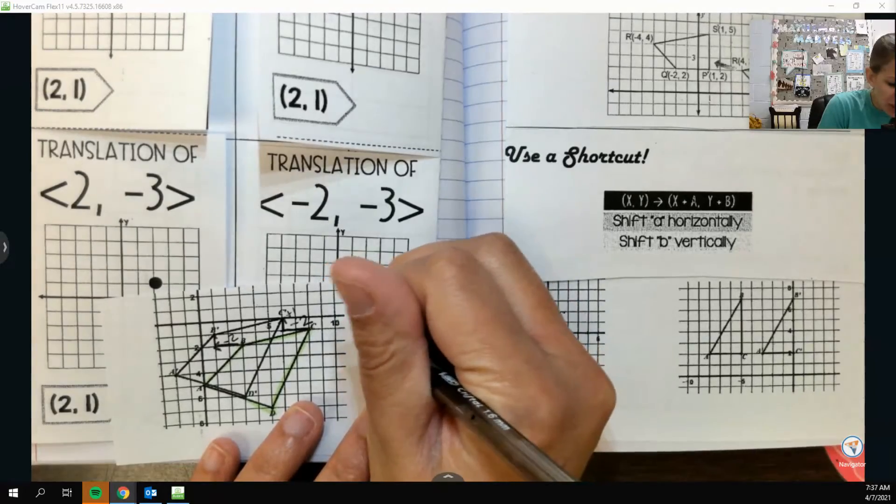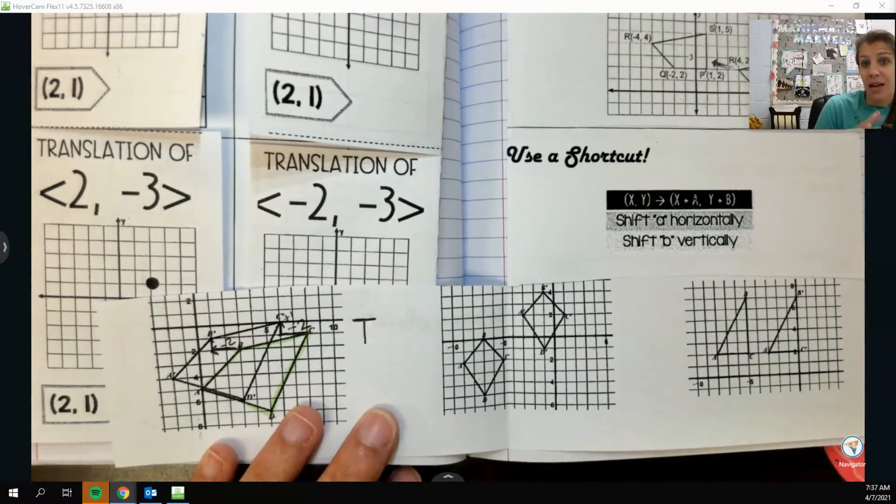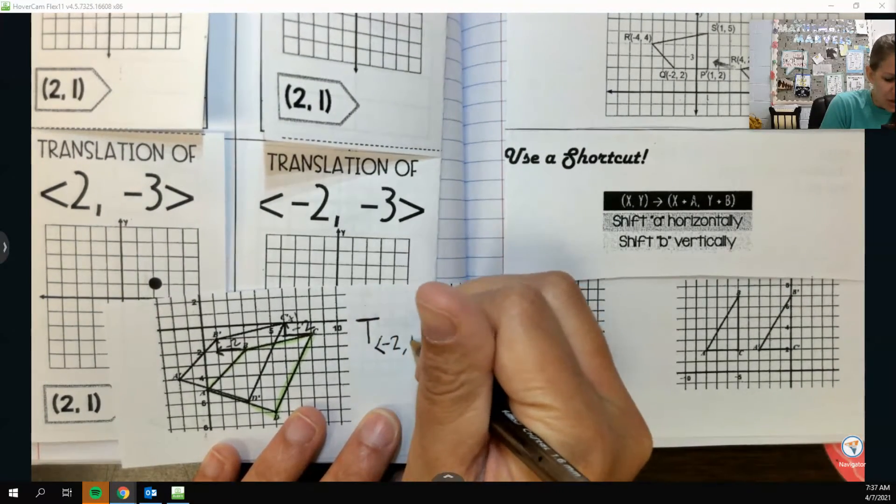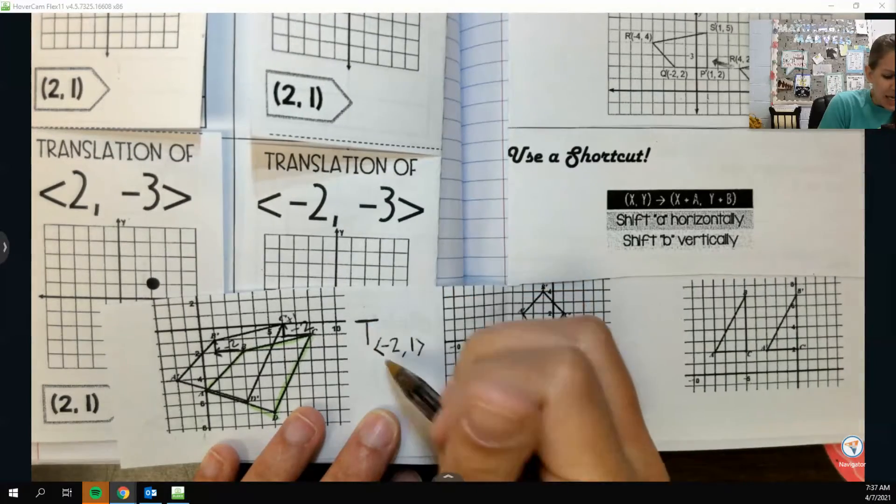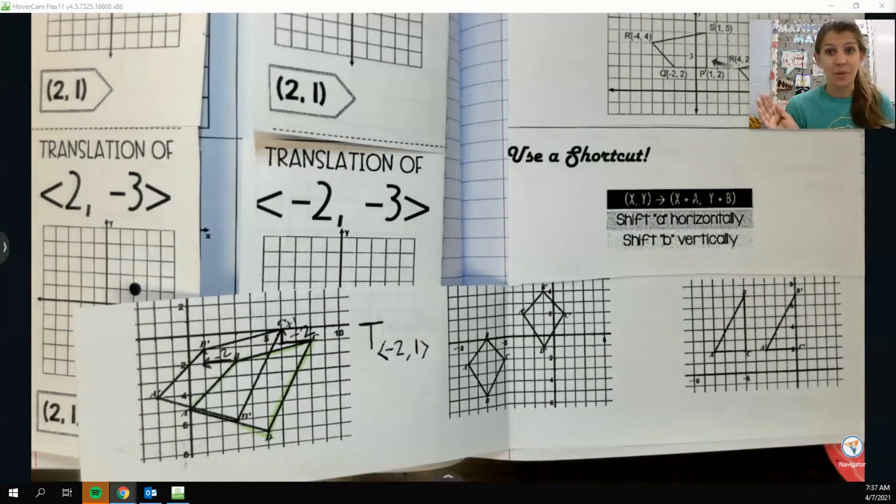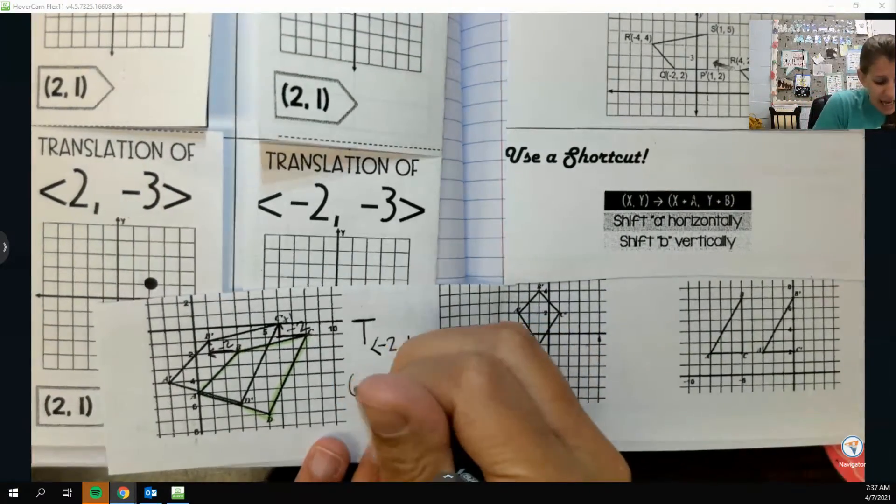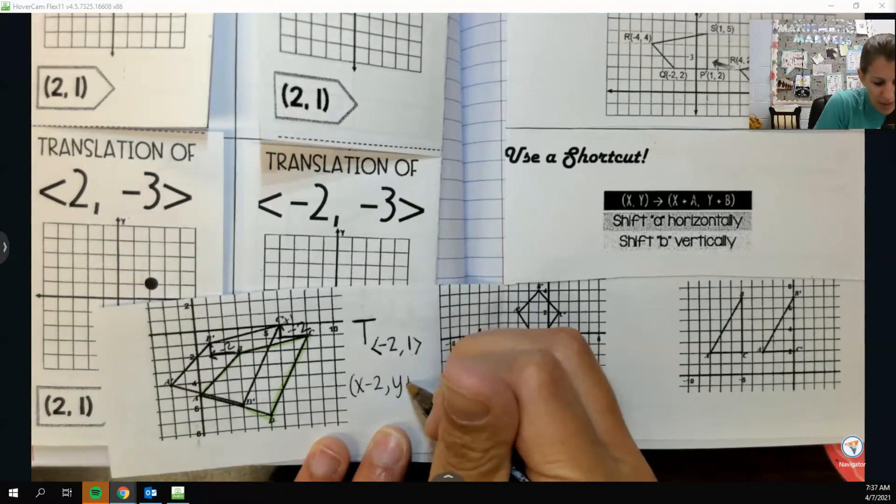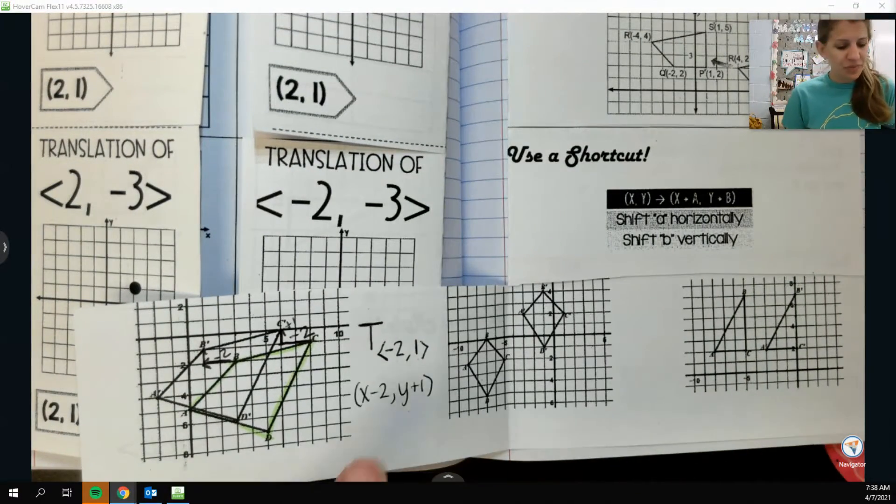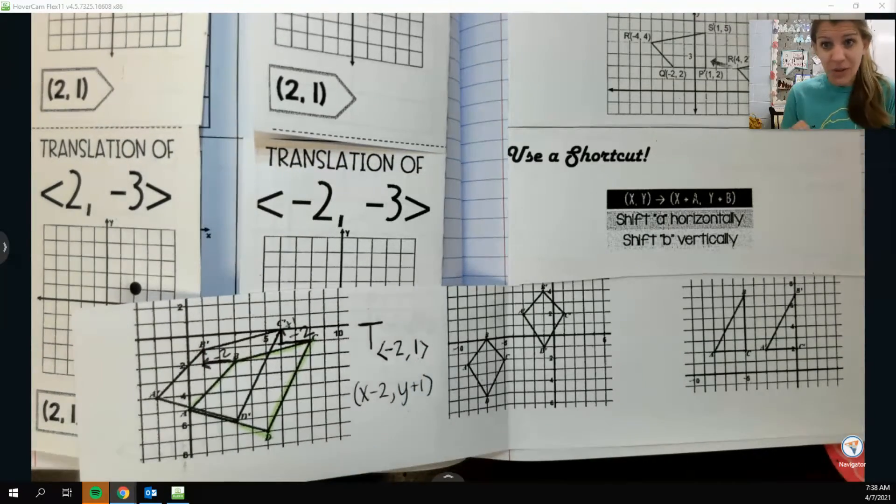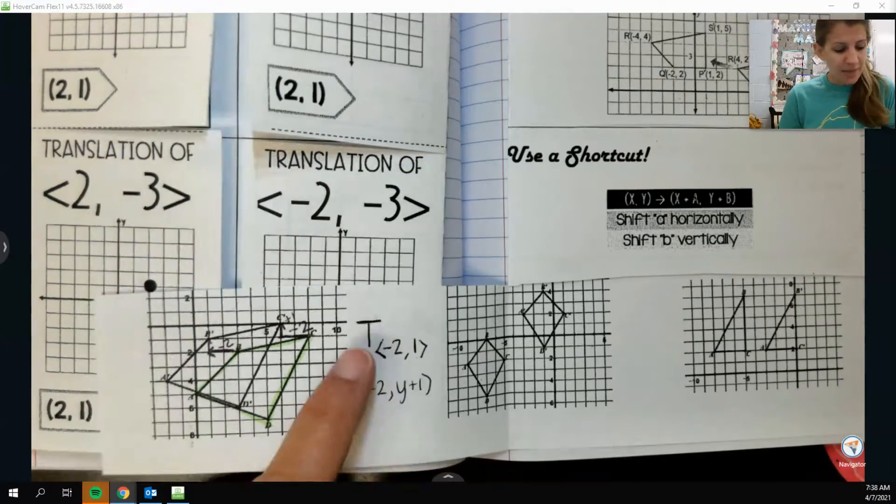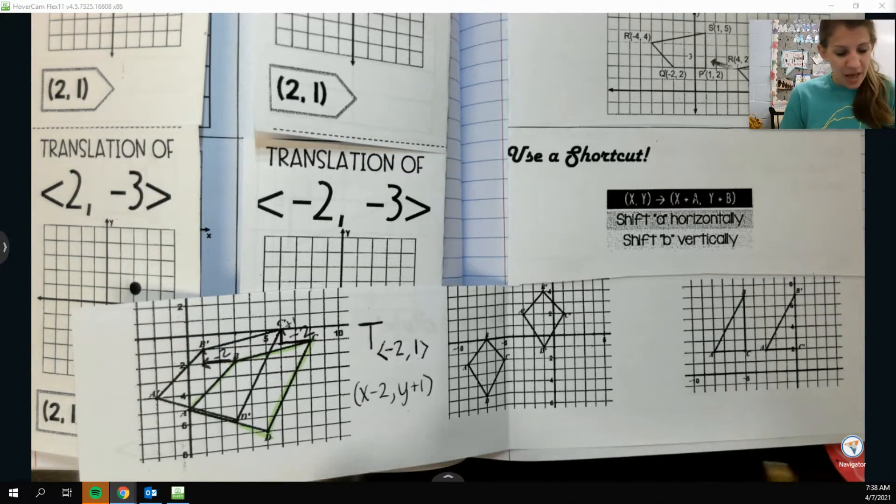Just for good measure, just to double check, I could do it again with point B to B prime. This also goes back 2, so negative 2, and up 1. They should all do the same thing, so really I only need to count one point. Because my translation here is going back 2 and up 1, or left 2 and up 1, we would describe that as T subscript negative 2, comma 1, because I went left 2, up 1, and up is positive. You could write it as x minus 2, y plus 1 as well. That would be in our ordered pair notation, rather than this is actually called vector notation. I kind of like that way, it feels a little bit more concise to me. But either one is good, and we want to be familiar with both.